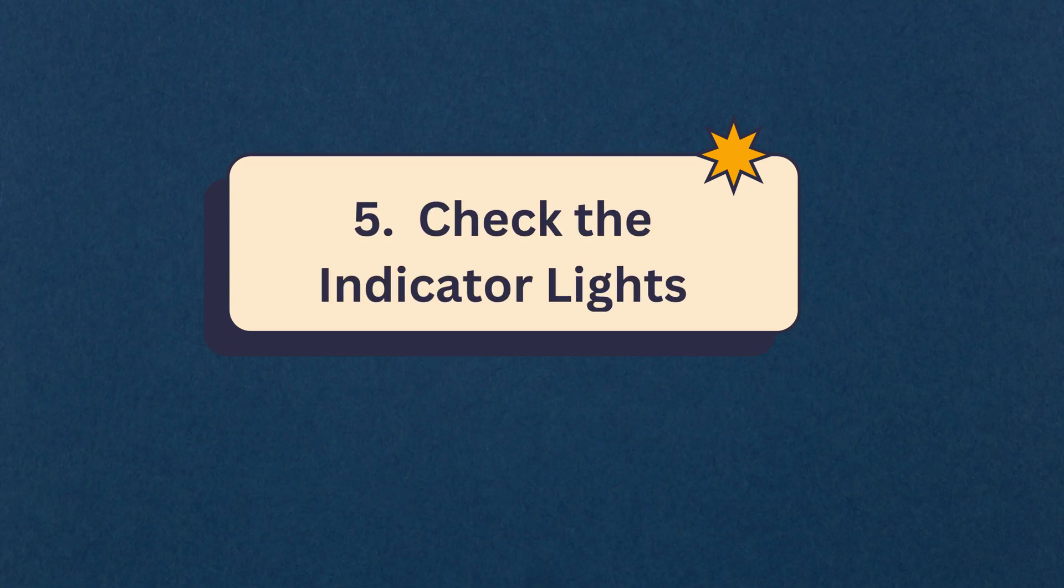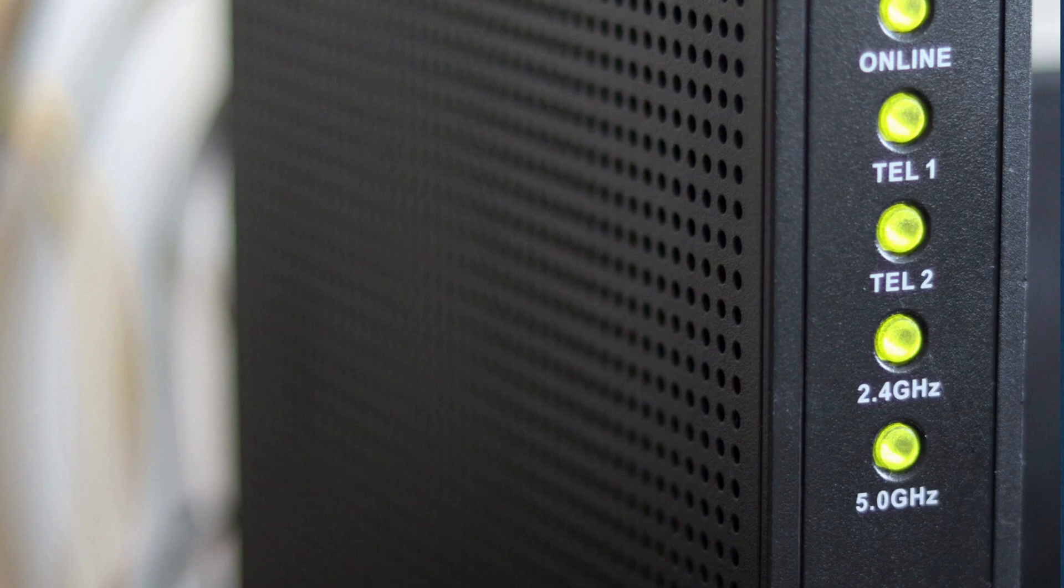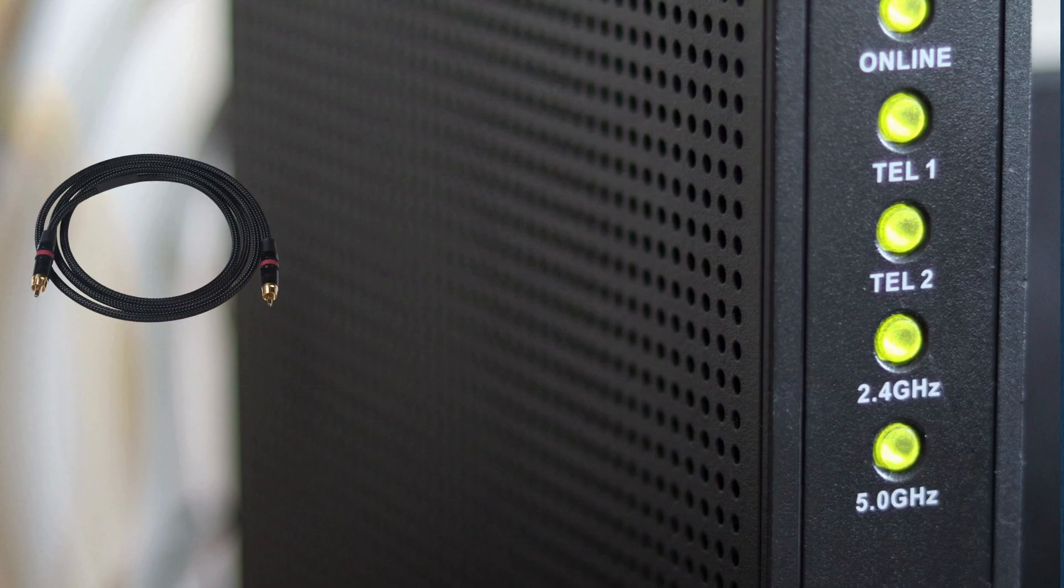Step 5: Check the indicator lights. Look at the modem's front panel to ensure the lights are on. Usually, you should see lights for power, coax, for the cable connection.